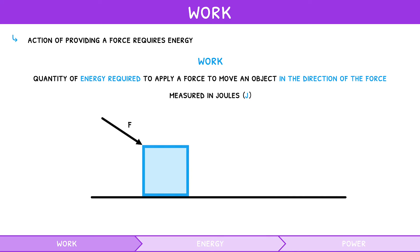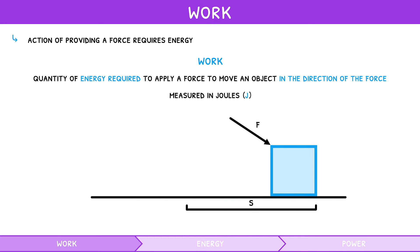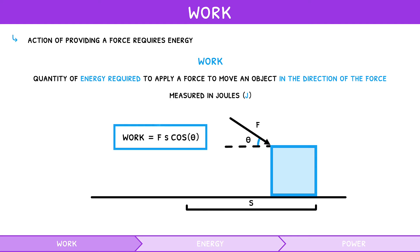If an object is moved a distance s at an angle theta from the force, the formula for work done is force times distance times cosine of theta. Note: if an object moves in a direction 90 degrees to the force, no work is being done.